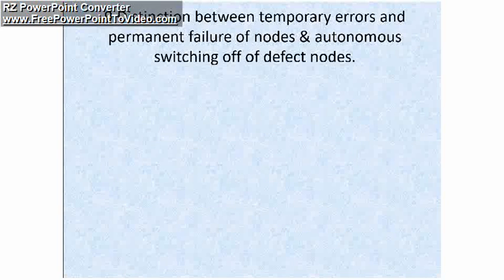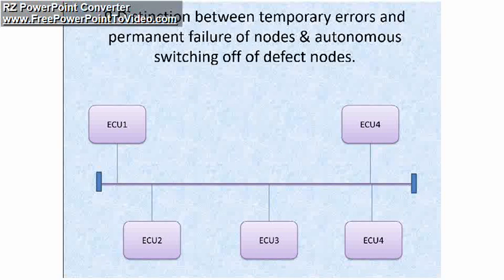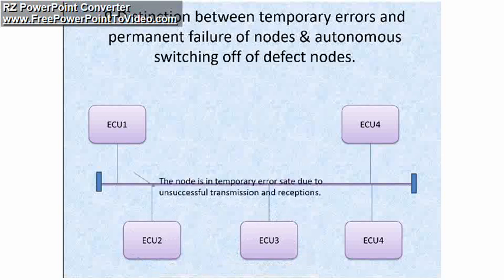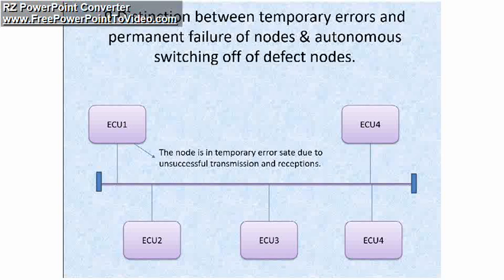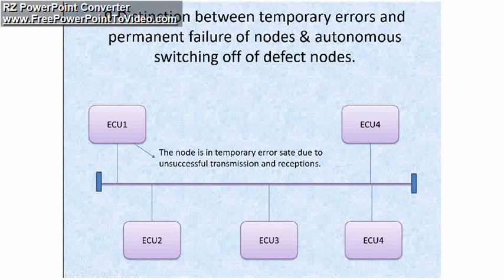The last property of the CAN protocol is distinction between temporary errors and permanent failure of nodes, and autonomous switching off of defective nodes. Temporary and permanent errors are distinguished with the help of error counters and hardware failures. We will cover error counters in detail in upcoming videos.